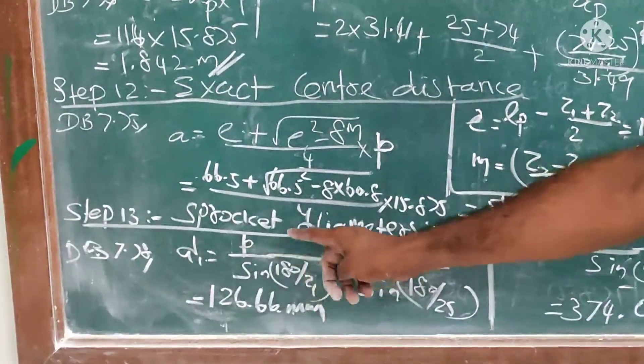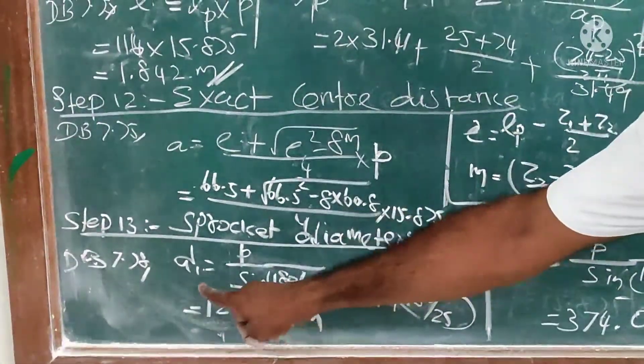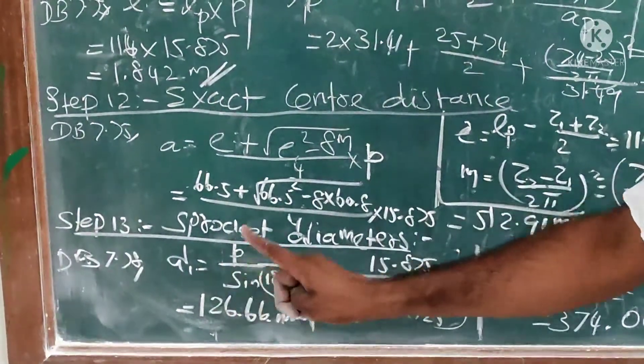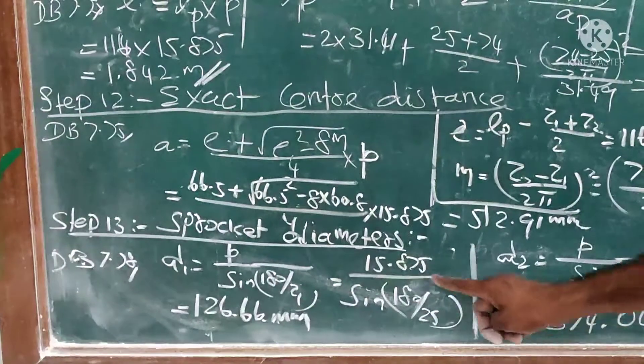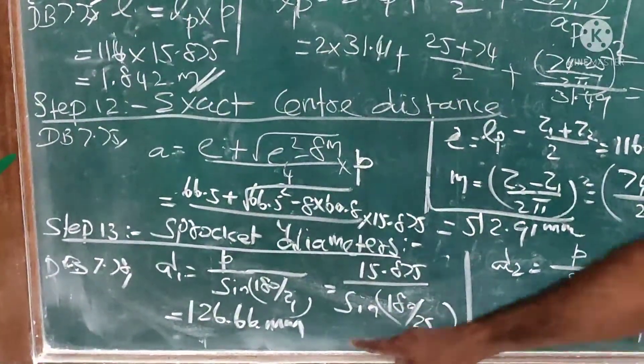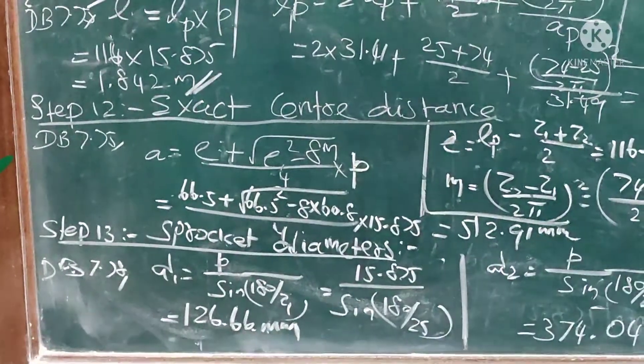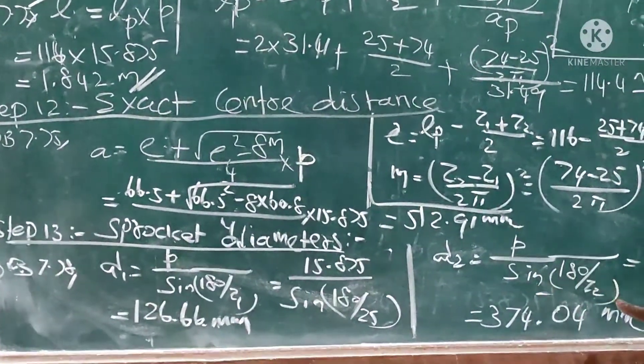Step number 13, last step: sprocket diameters. From data book 7.78, D1 (smaller diameter) = P/sin(180/z1) = 15.875/sin(180/25) = 126.66 mm.